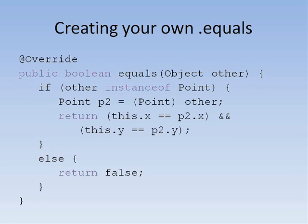We first check to make sure other is a point. Instance of is a reserved word in Java that lets you test whether a particular object is a member of a class. If other is an instance of point, then we return true if the x and y values are the same.